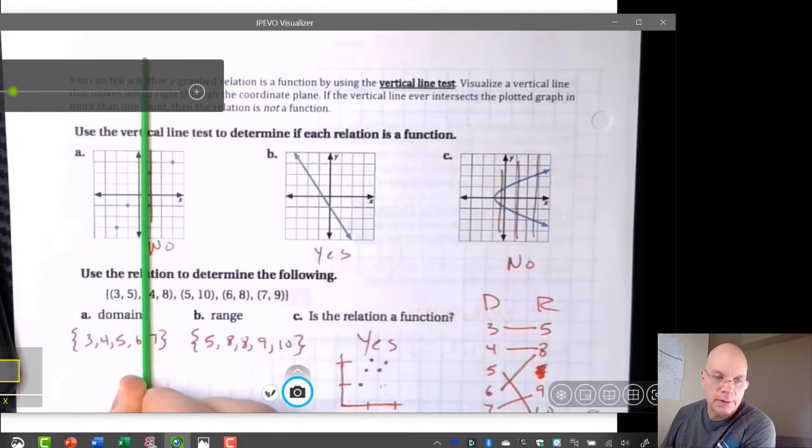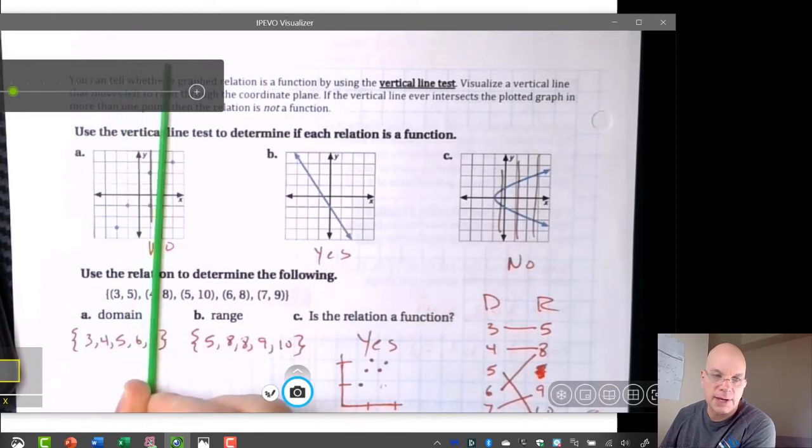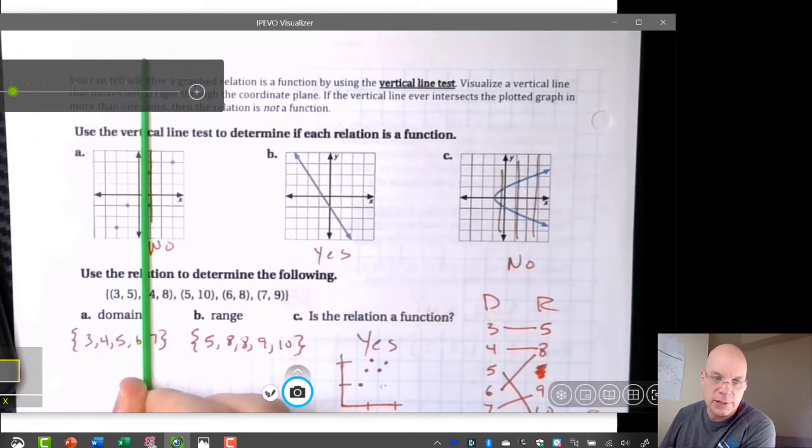But as soon as I move my vertical line over here, I'm intersecting more than one point on the supposed function, or on the relation. I realize it can't be a function if it fails that test. I'm using the right edge of this pickup stick to represent my line.